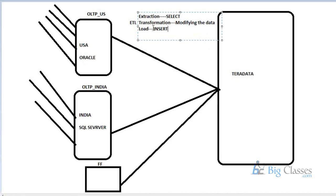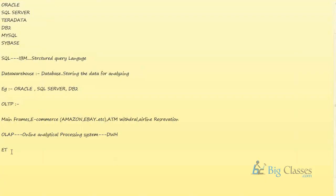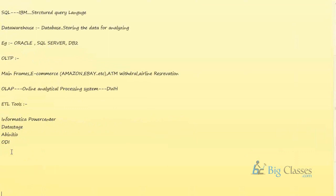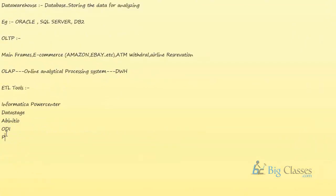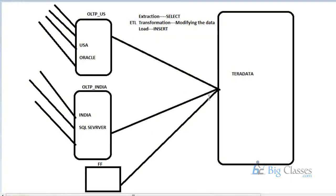That process is called the ETL process. To perform this ETL process, there are various ETL tools available — these are middleware tools. Examples include Informatica PowerCenter, DataStage, AbInitio, ODI (Oracle Data Integrator), Pentaho, and other tools used to integrate data from OLTP systems into the data warehouse.